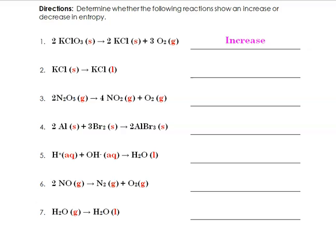For the second one, we have potassium chloride in its solid state going to potassium chloride in its liquid state, so this would be melting. In this case as well, we would see that would be an increase in entropy, because we're going from solid to liquid.